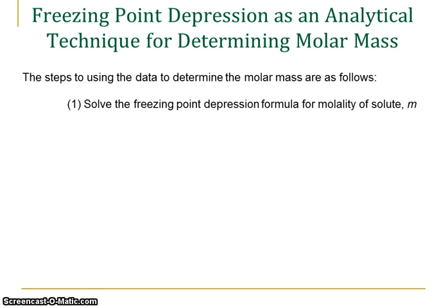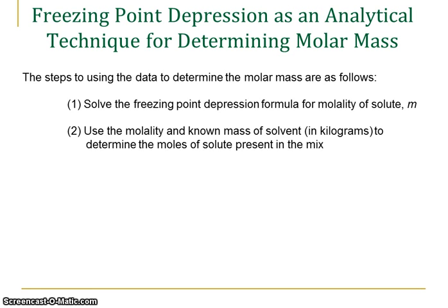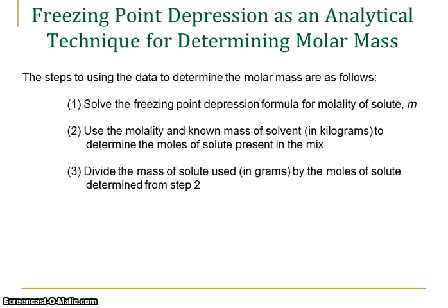The first step is to solve the freezing point depression formula — delta T equals Kf times m times i — for molality. We'll know delta T because we recorded the two temperatures and calculated it. We'll know Kf because we either calculated it in the lab or found it in a table. And we'll know i because we're generally working with molecular compounds, so i is typically 1. Once we know the molality of the solute, and we have the kilograms of solvent we recorded, I can use those two values and the definition of molality — possibly with dimensional analysis — to find the moles of solute I actually introduced. Then, knowing the moles of solute and the recorded mass of solute, I take those two values and use the definition of molar mass to determine how many grams are in one mole.